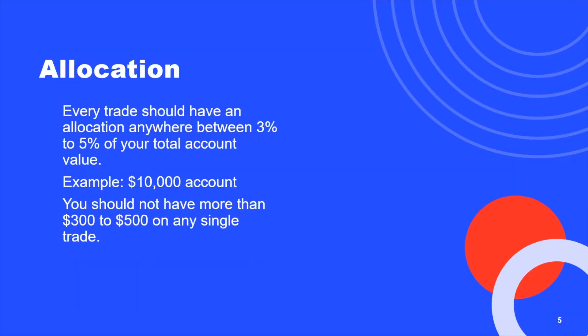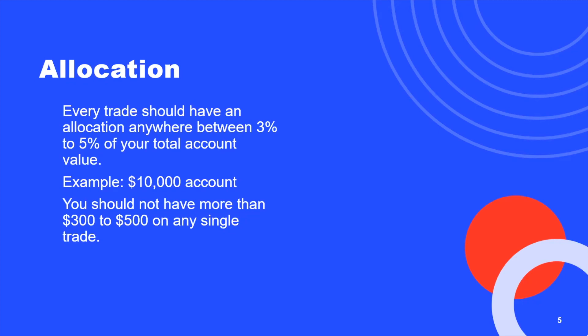Allocation — every trade should have an allocation anywhere between 3% to 5% of your total account value. So on a $10,000 account, you should not have more than $300 to $500 on any single trade.